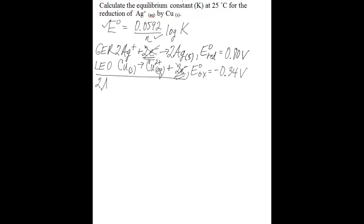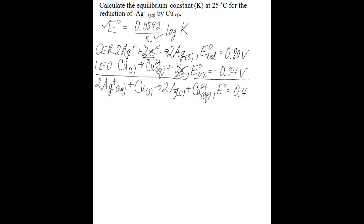And then following that, you'll have two silvers produced. So you cancel the electrons on both sides of this equation to give you your overall balanced redox equation of two Ag⁺ plus copper solid, giving you two solid silvers plus the copper 2+ cation. Then you add up your half reaction cell potentials to give you an overall reaction cell potential under standard conditions of 0.46 volts.